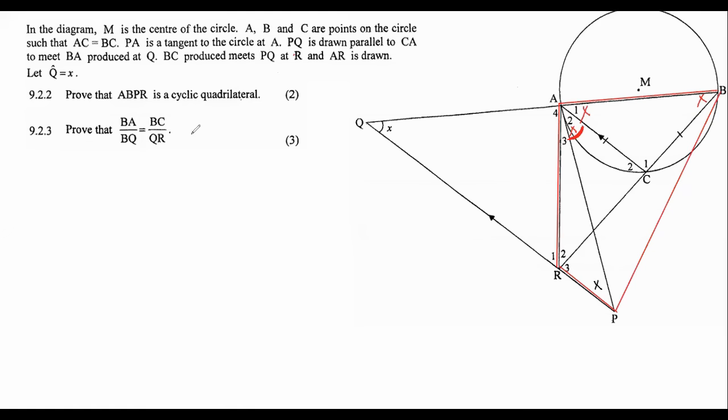Prove that BA over BQ is equal to BC over QR. Usually when we have this type of thing over here, where there's like a fraction, it could either be proportionality or it could even be similarity. This one is actually going to be similarity.